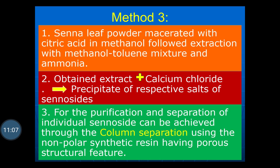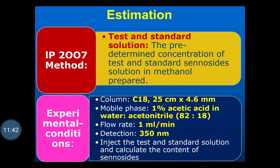For the column chromatography separation, a nonpolar synthetic resin with porous structural features is used as the stationary phase. All the sennosides — Sennoside A, Sennoside B, Sennoside C and Sennoside D — are separated out in the form of their calcium salts.